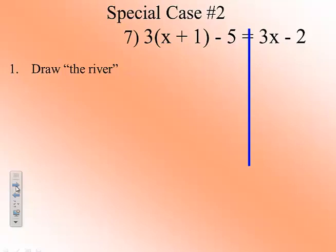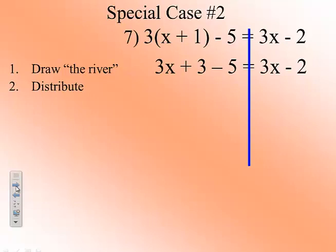and then we need to distribute. We need to distribute that 3. So when we distribute, we'll end up with 3x plus 3 minus 5 equals 3x minus 2.